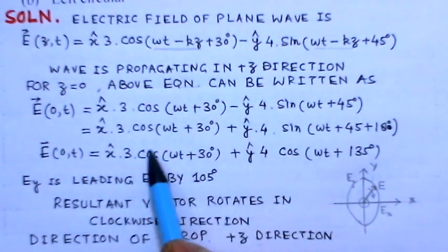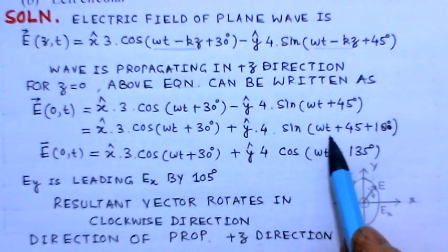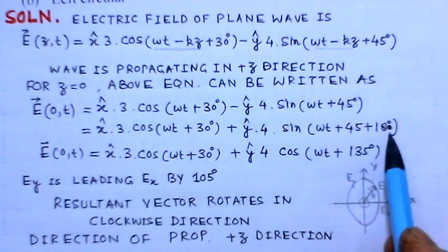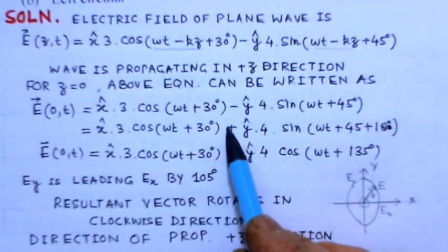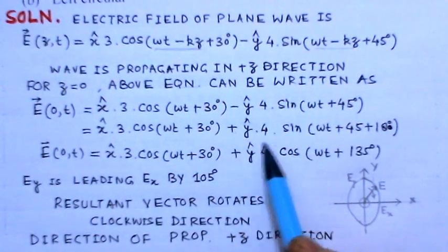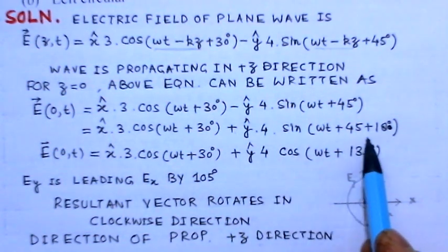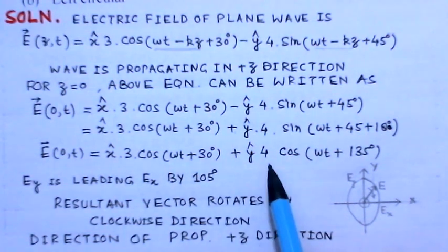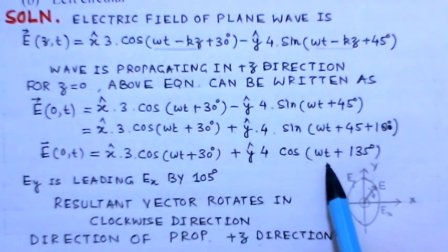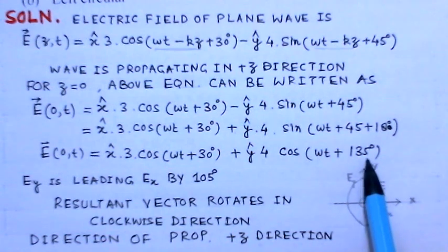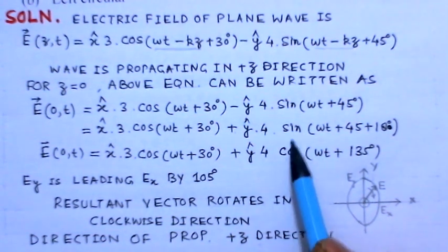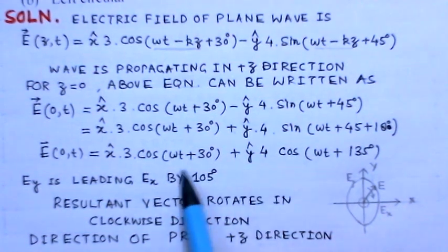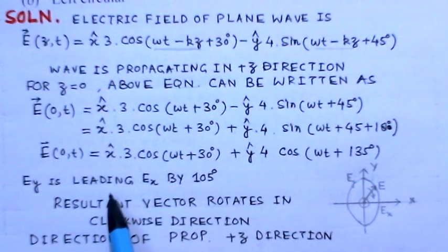We convert the y component: since sin(180° + θ) = −sin(θ), the negative sign gets absorbed, giving us ŷ · 4sin(ωt + 45° + 180°). This simplifies further: adding 90° converts sine to cosine, so we get ŷ · 4cos(ωt + 135°). Now both components are expressed as cosine terms.